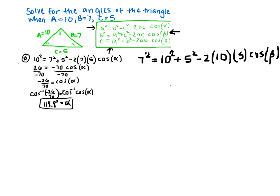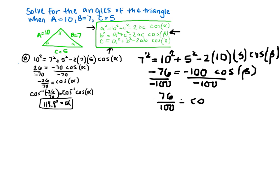When we simplify this, we find negative 76 equals negative 100 times cosine of beta. So we divide by negative 100 on both sides, and we're left with 76 divided by 100 equals cosine of beta. Again, we take the inverse cosine of both sides, and we find that beta equals roughly 40.5 degrees.